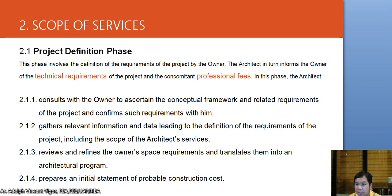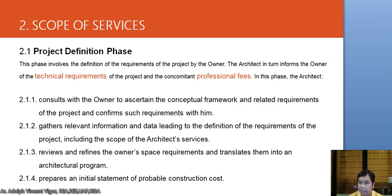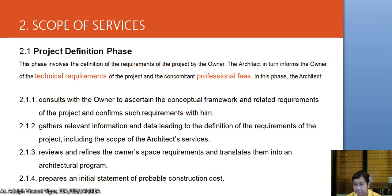You also prepare an initial statement of probable construction cost. When doing the probable construction cost, it's usually a general, generic idea of what the cost may be — sometimes per square meter, sometimes per square foot. For example, the per square meter cost for a high-end residential building is different from that of a low-end building.